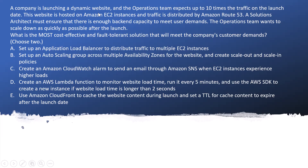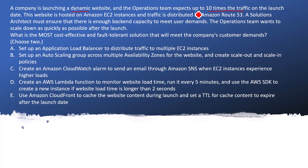The question says: a company is launching a dynamic website. The word 'dynamic' means the output is going to change at runtime, and the required resources are also going to change. The operations team expects up to 10 times the traffic on the launch date. This website is hosted on Amazon EC2 instances and traffic is distributed by Amazon Route 53.